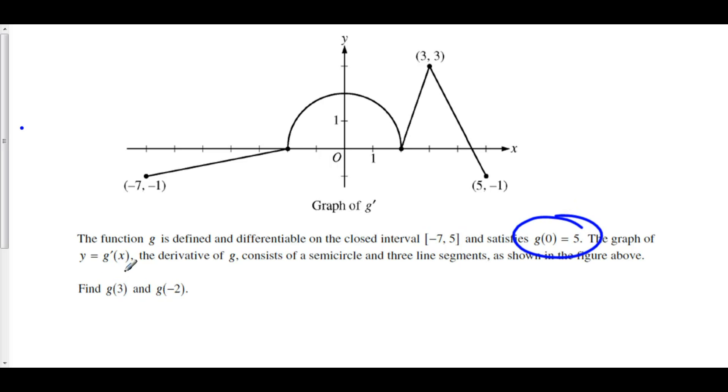So, let's first start with g of 3. g of 3 using our formula for net change is equal to our initial value of g, g of 0, plus the net change from 0 to 3 of g prime.